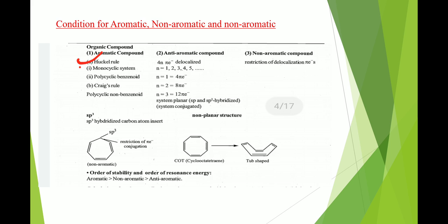Conditions for aromatic, non-aromatic, and anti-aromatic compounds: For an aromatic compound, it should follow Hückel's rule, be a monocyclic system or a polycyclic benzenoid system, and follow Craig's rule. For an anti-aromatic compound, it should contain 4n pi electrons, be a delocalized and planar system, and contain sp and sp2 hybridized carbon atoms. For a non-aromatic compound, there should be a restriction of delocalization of pi electrons.